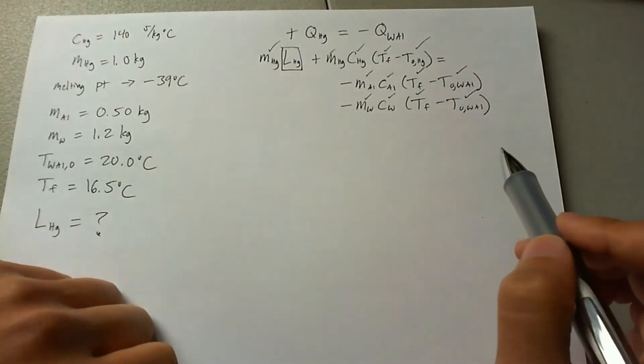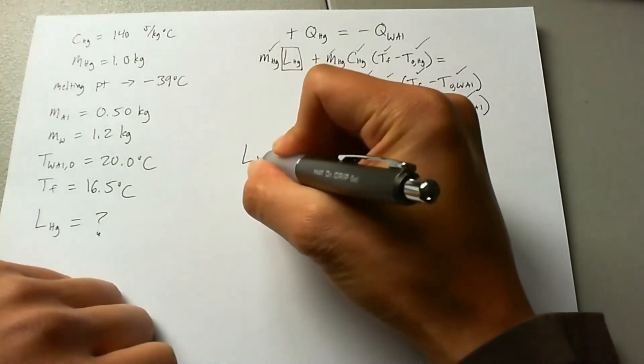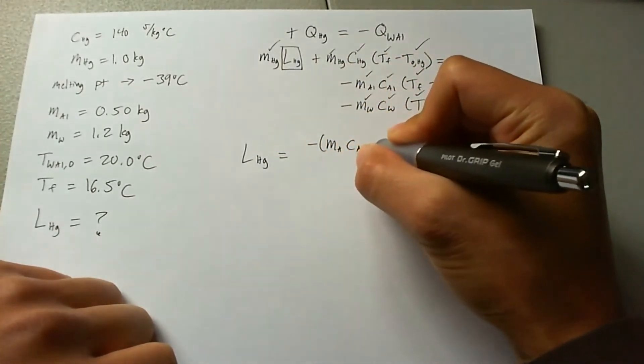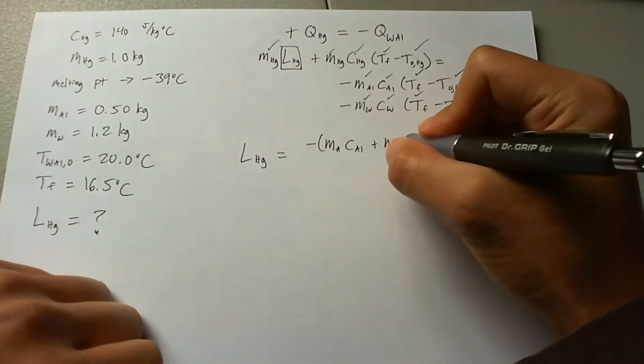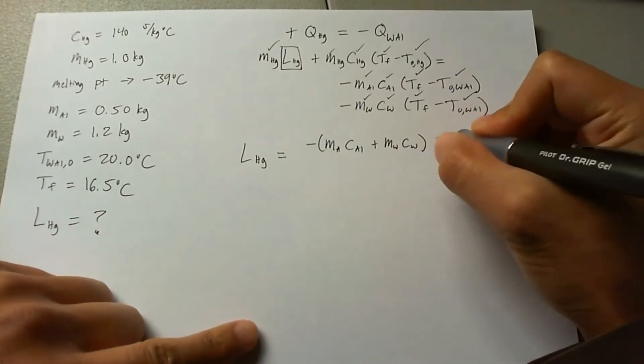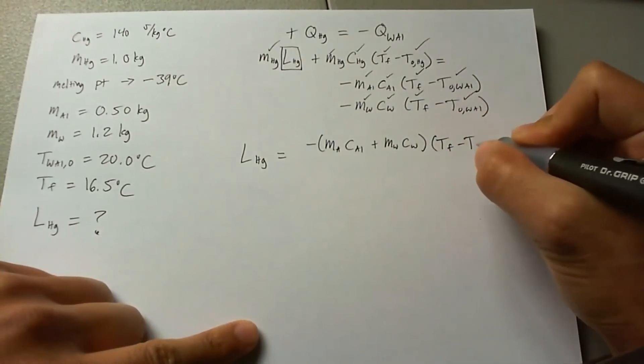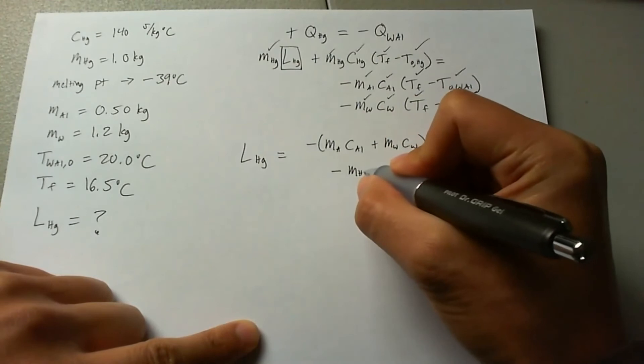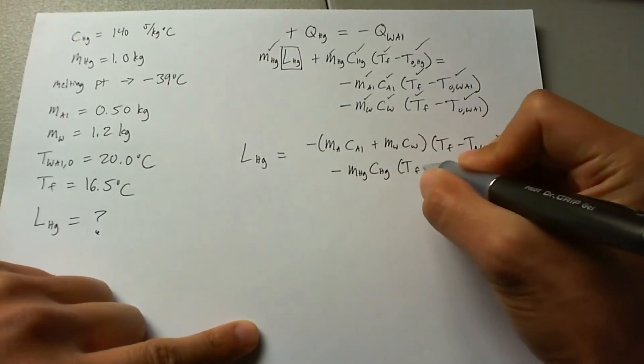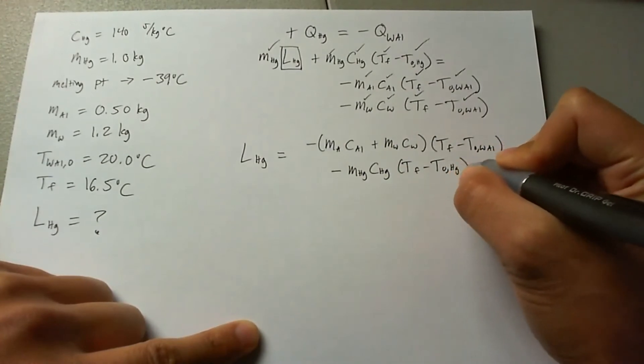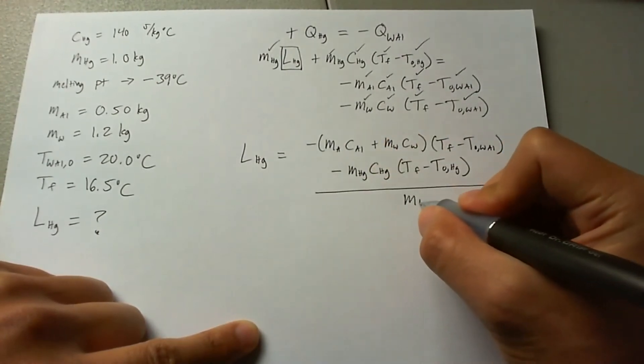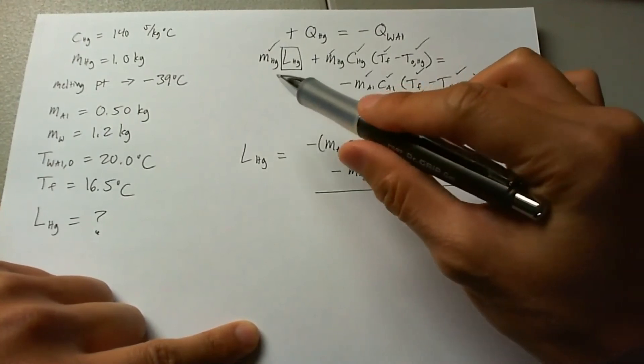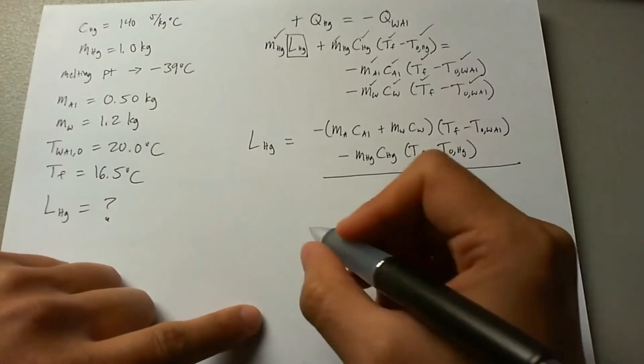So isolating everything, L of mercury is negative mass aluminum times heat capacity of aluminum plus mass of water times heat capacity of water, times Tf minus T initial, minus mass of mercury times heat capacity of mercury times Tf minus T initial of mercury, all divided by the mass of mercury. So you took this, put it on the other side, and then you divide everything by mass of mercury.